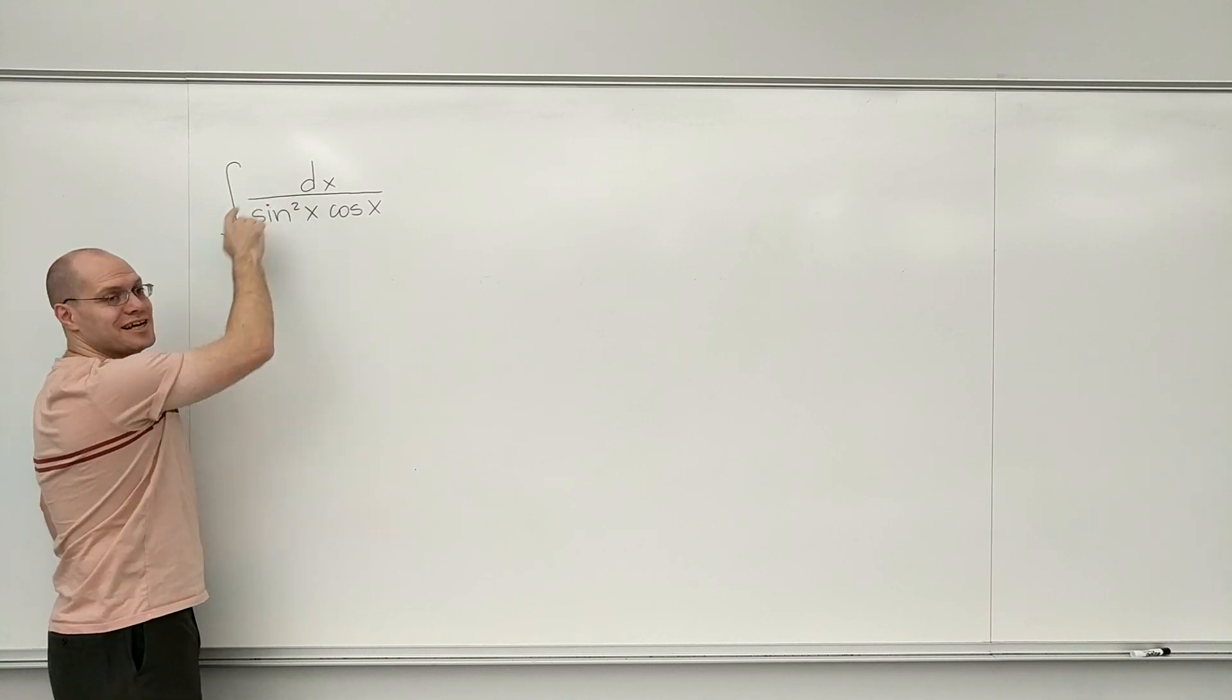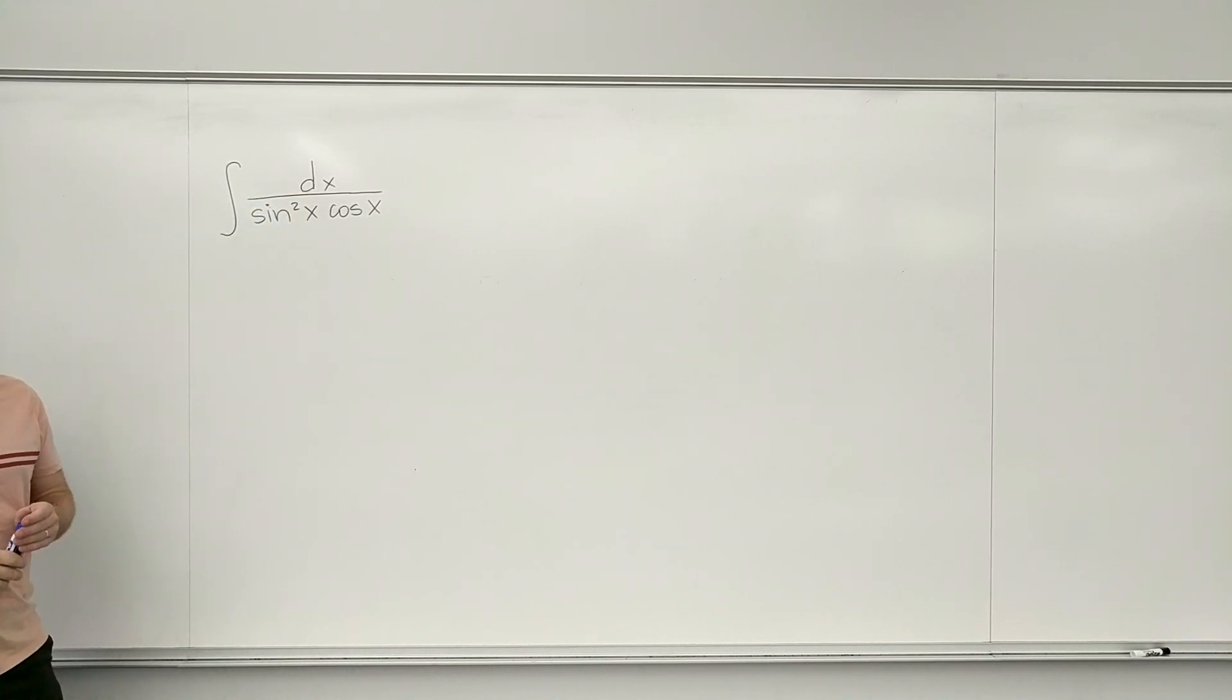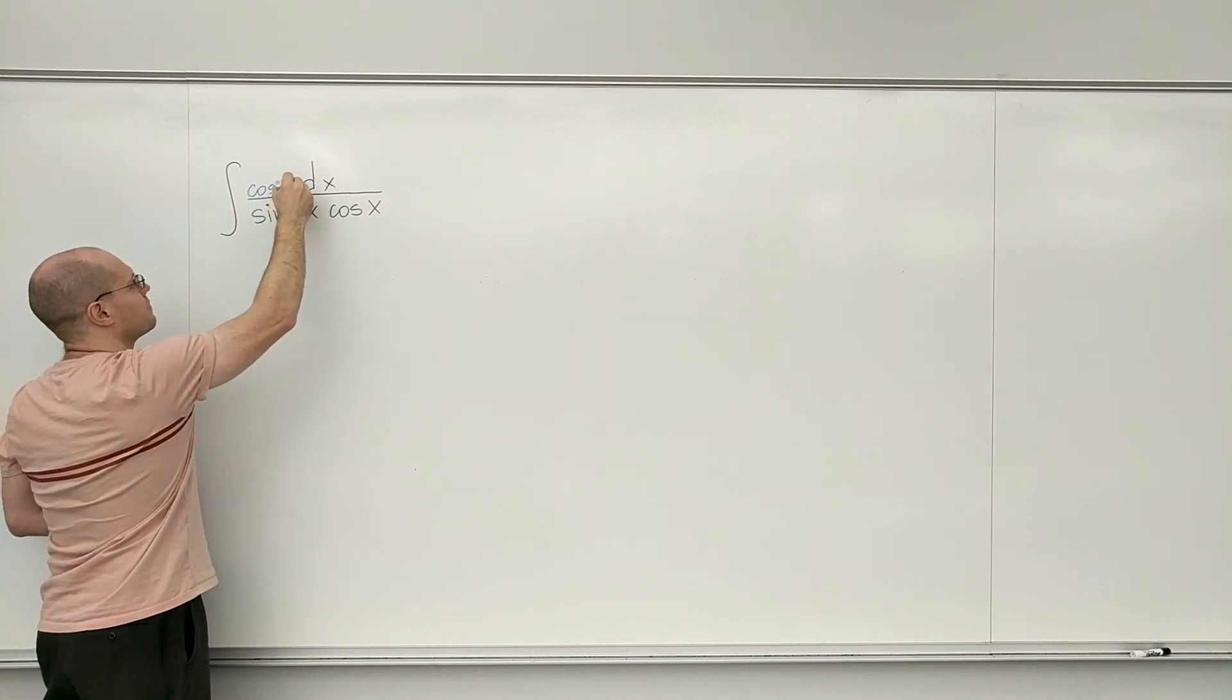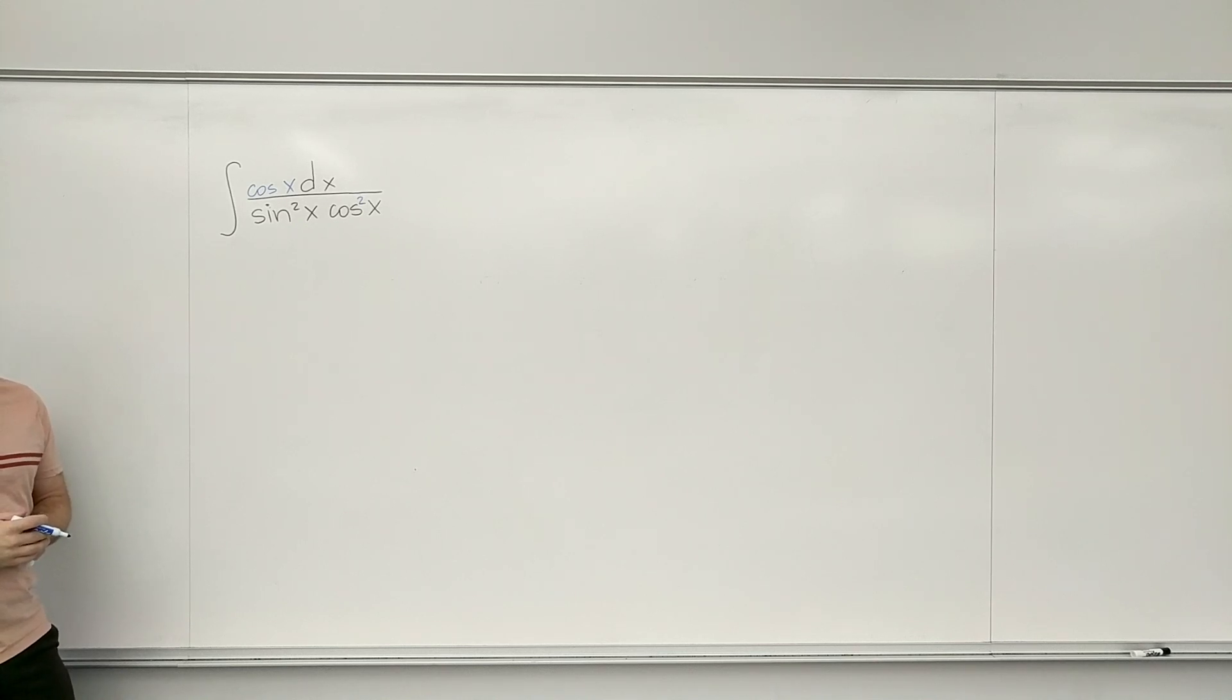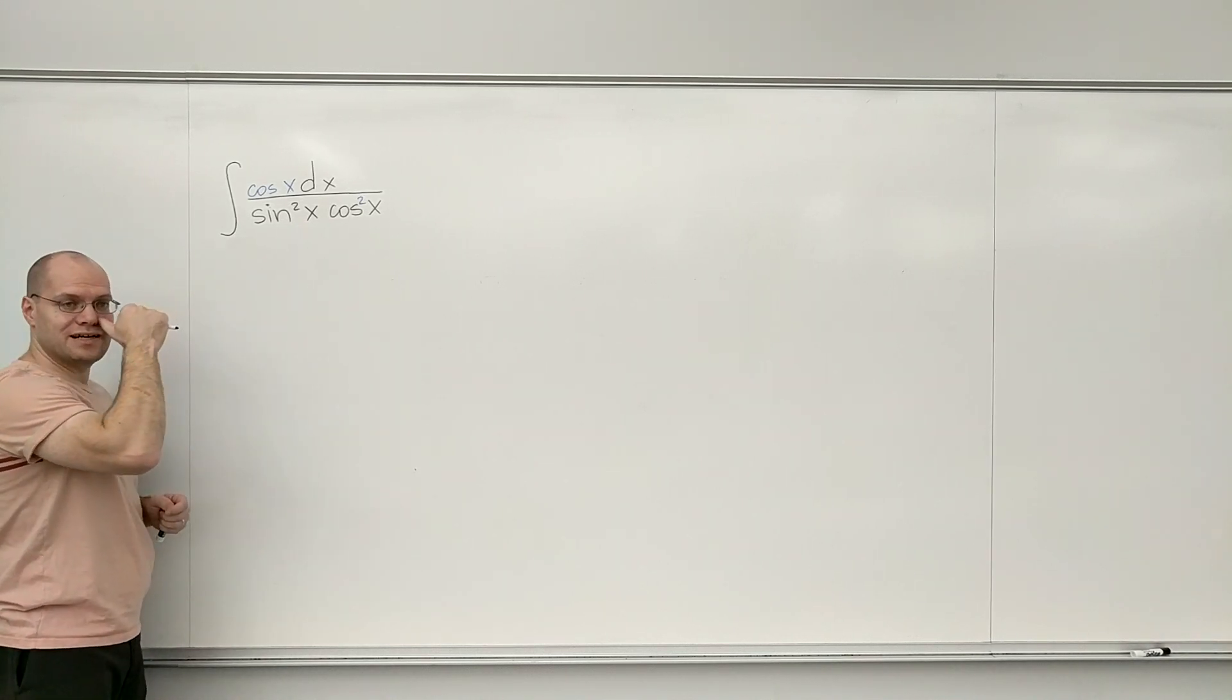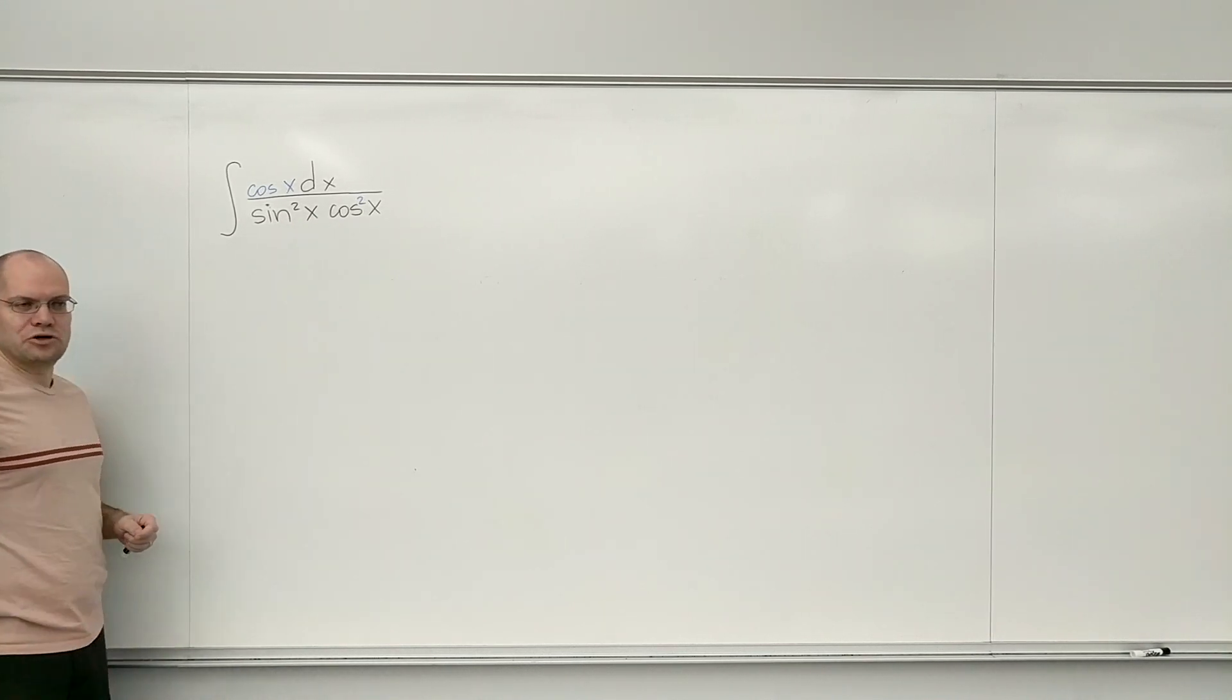Steve is suggesting he wants to have a cosine here. So you know what you do if you want to have a cosine there? You put it there, and to make up for it, you put a 2 here. Make sense? I multiplied by cosine of x, and I divided by cosine of x.